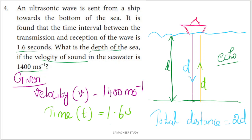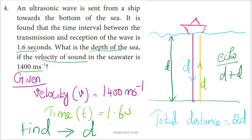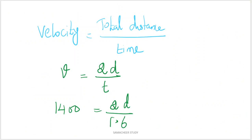We need to find the depth of the sea. The total time for the round trip is 1.6 seconds. The velocity of sound in water is 1400 m/s. Since the wave travels down and back, the total distance traveled is 2d.